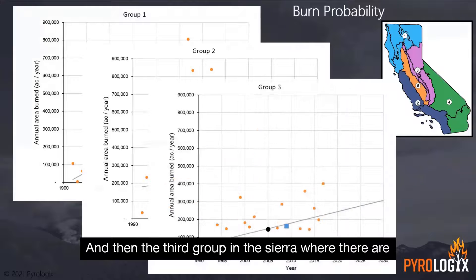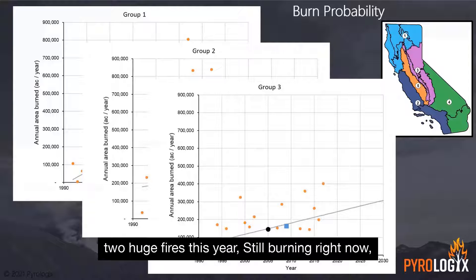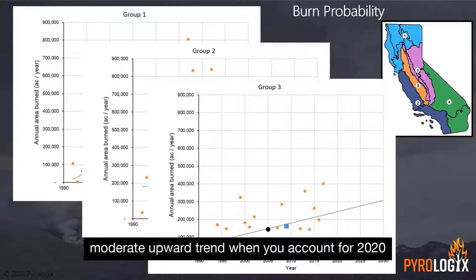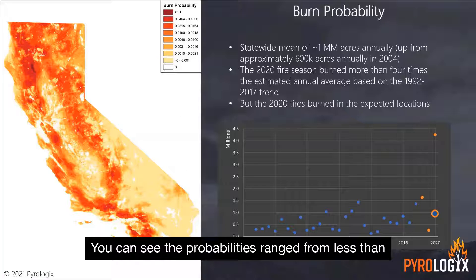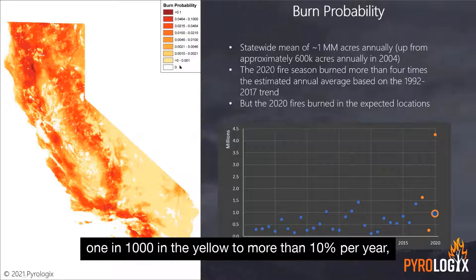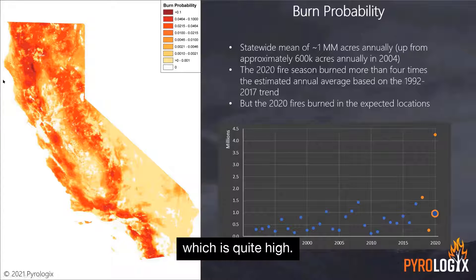And then the third group in the Sierra, where there are two huge fires this year, still burning right now. Moderate upward trend — when you account for 2020 and 2021, in this data set it'll be a much stronger upward trend. You can see the probabilities range from less than one in 1,000 in the yellow to more than 10% per year, which is quite high.